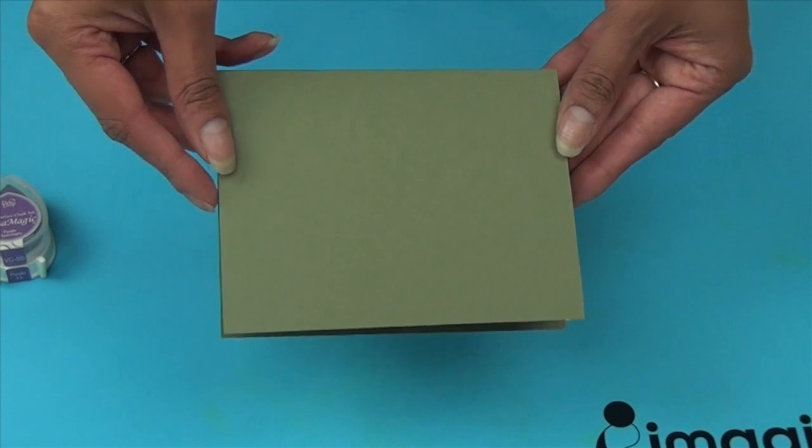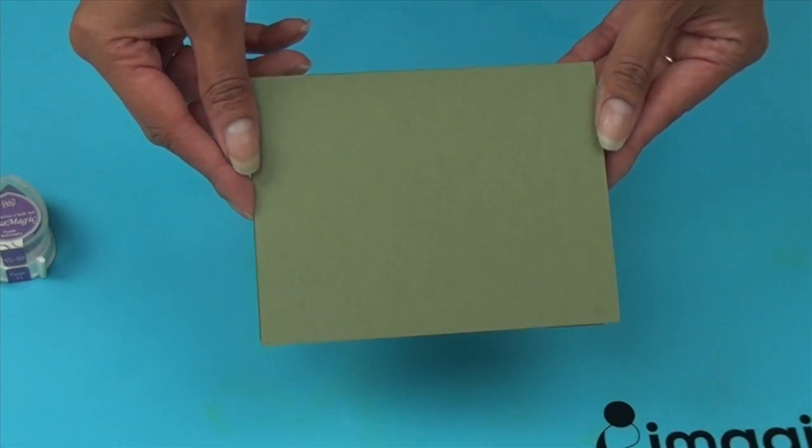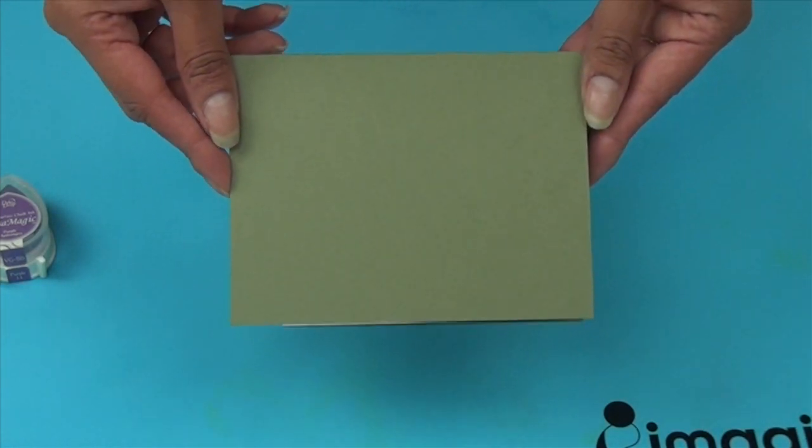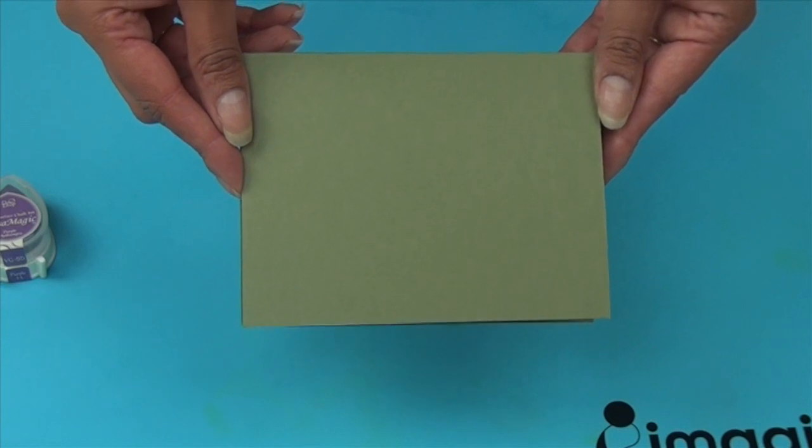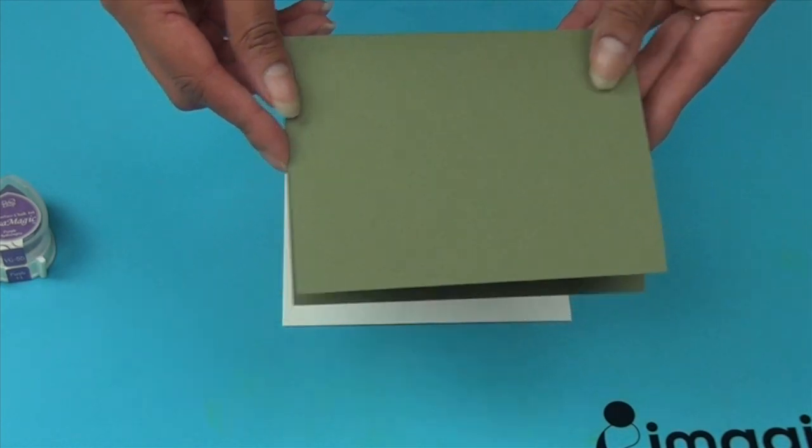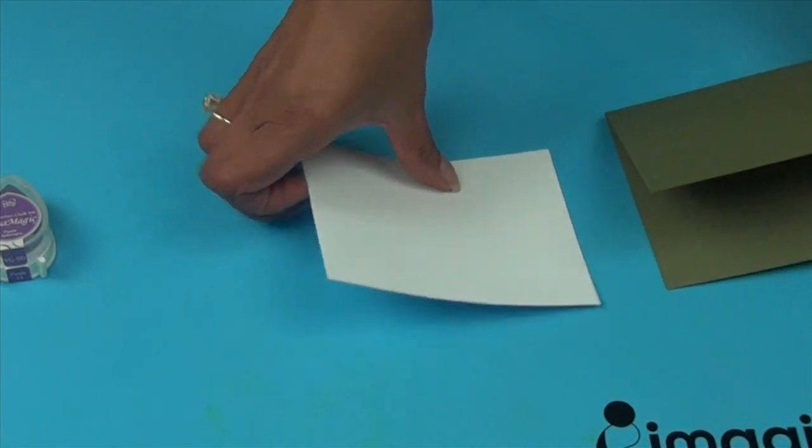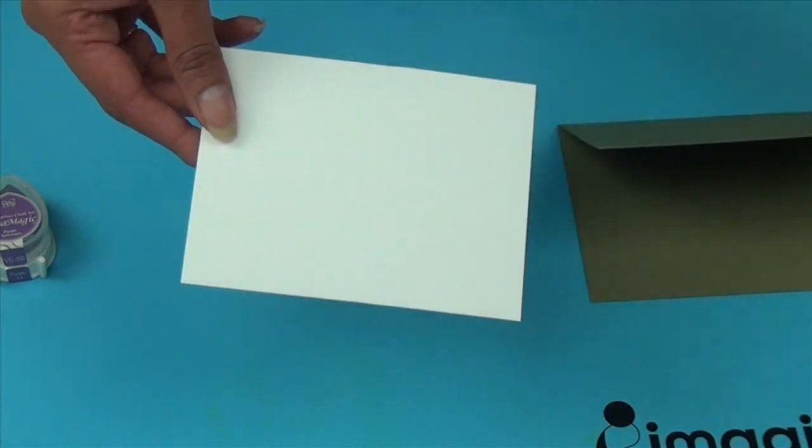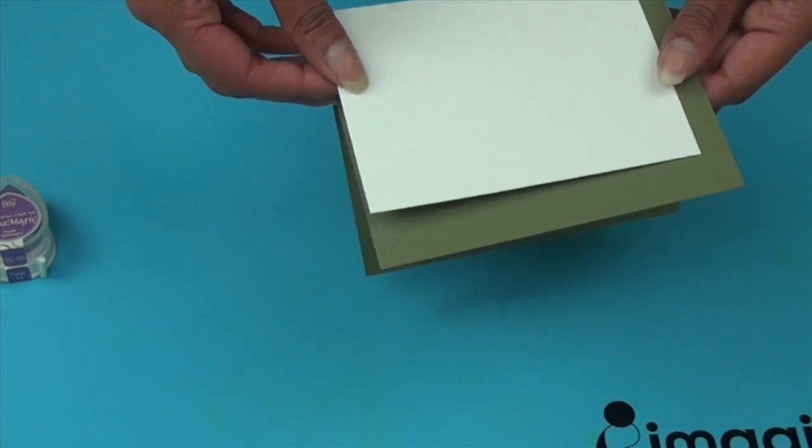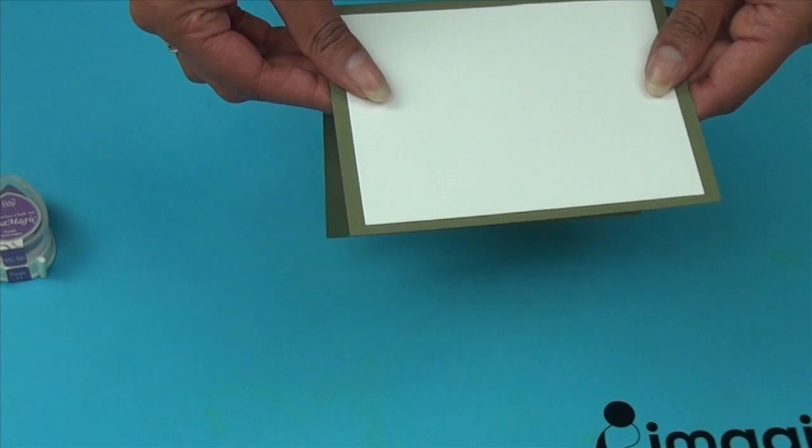For the card base, I've already cut and scored a piece of dark green cardstock. I've made an A2 size, which is 5 1⁄2 by 4 1⁄4 inches. For the layering piece, I cut a piece of white cardstock that is slightly smaller, so about a quarter inch of green cardstock will show on all sides.